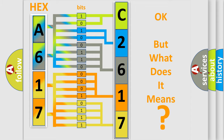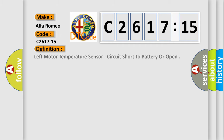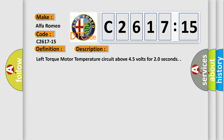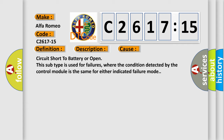The number itself does not make sense to us if we cannot assign information about what it actually expresses. So, what does the diagnostic trouble code C2617-15 interpret specifically for Alfa Romeo? The basic definition is: Left motor temperature sensor, circuit short to battery or open. This is a short description of this DTC code: Left torque motor temperature circuit above 45 volts for 20 seconds.